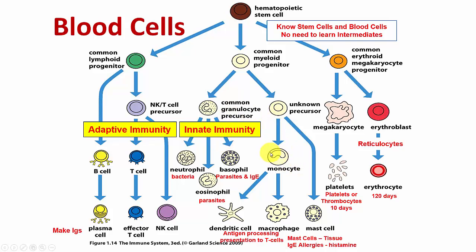We also have monocytes, which differentiate into dendritic cells and macrophages — antigen-presenting cells that present antigens to T cells. Then we have mast cells, which are tissue cells found in the tissue with IgE on their surface. The mast cell can release a lot of histamine, causing anaphylactic shock in an allergy — for example, binding peanut allergens, causing histamine release that dilates blood vessels and dangerously drops blood pressure. It's the only cell type that can kill us.